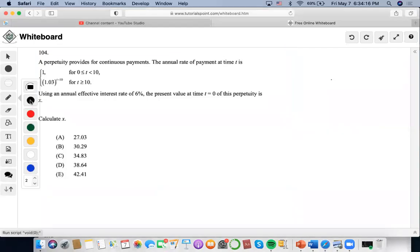Hi. So for this one, it says the perpetuity provides for continuous payments. The annual rate of payment at time t is given. Using an annual effective rate of 6%, the present value at time zero of this perpetuity is x. Calculate x.